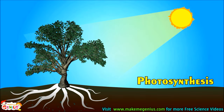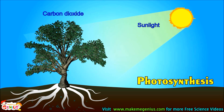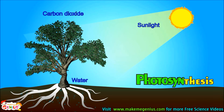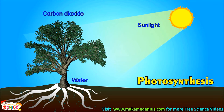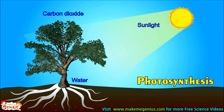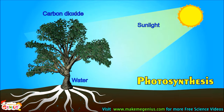Plants are the only living species who make their own food. They use sunlight, carbon dioxide from air, and water from soil to make their food. This process is called photosynthesis. So now you know plants make their own food. All other species, like animals and we humans, are dependent on plants.